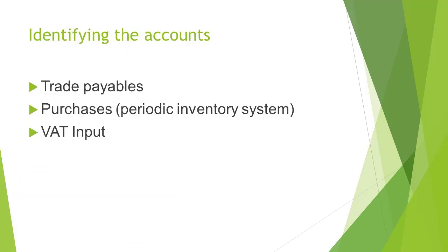When we look at this transaction, we need to identify the affected accounts. The first account is Trade Payables Control, since we purchased the inventory on credit. The second account will be the Purchases Account, because the business is making use of the periodic inventory system. This is different from the perpetual inventory system, where the purchase of inventory is recorded in the inventory account.